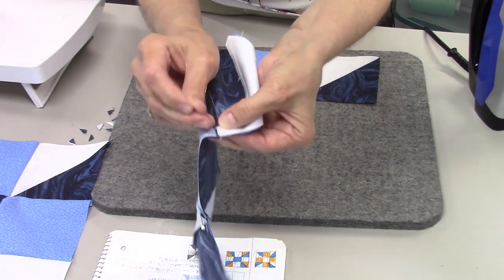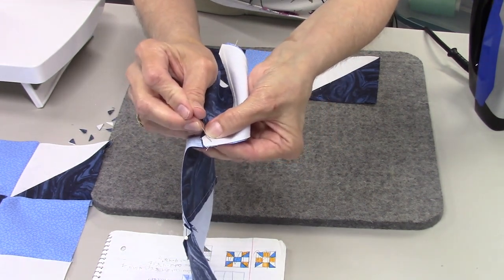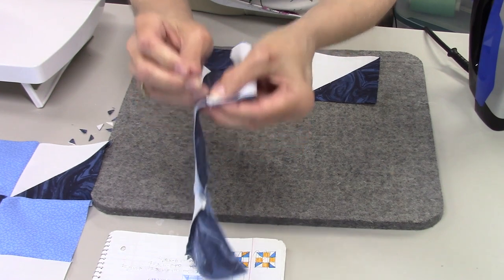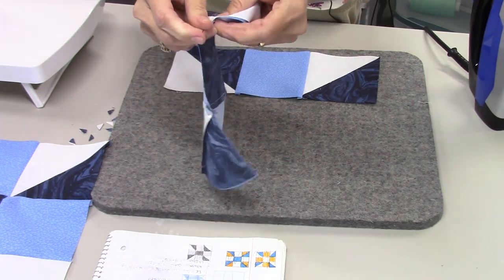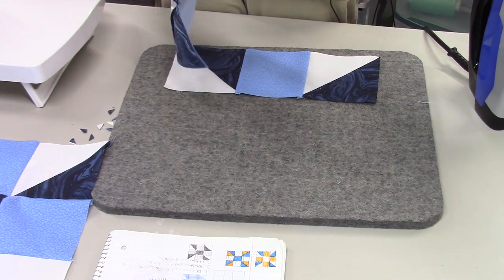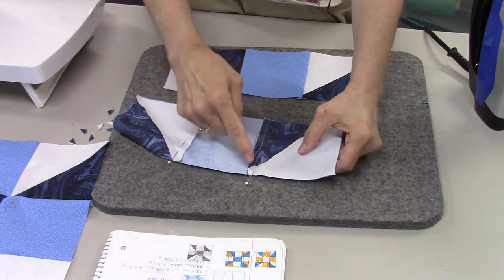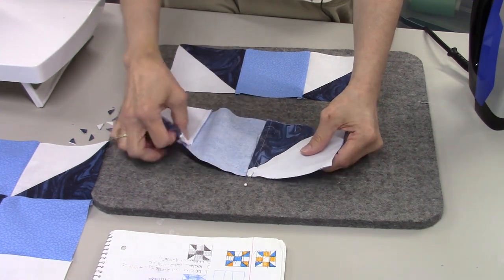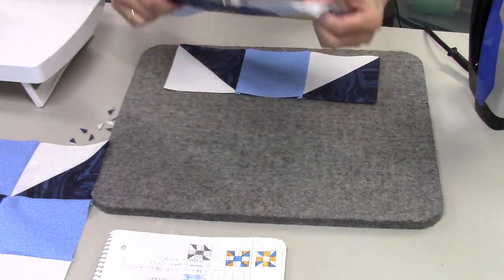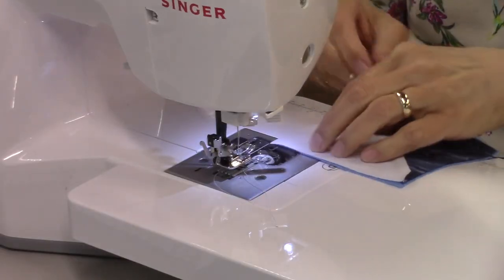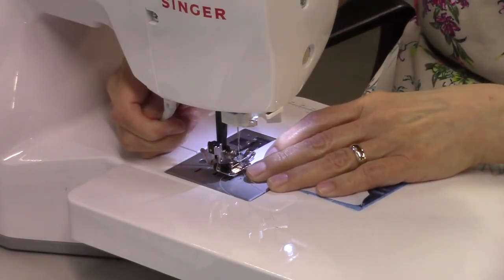When you're stitching, what you want to do is stitch on the seam side of that where they cross, just by a thread or two, a fabric thread or two. You don't want to go on the block side of it. You want to stay on the seam side of it so you don't cut off your point. So let's sew this and see how it comes out.